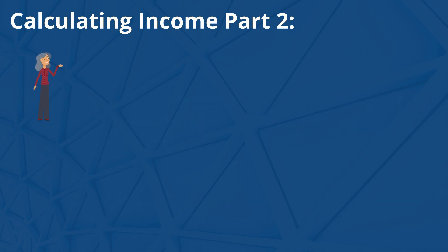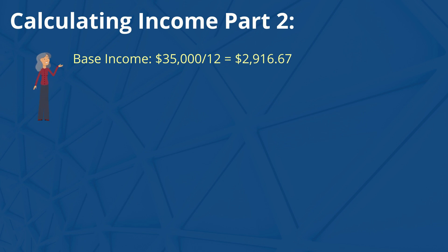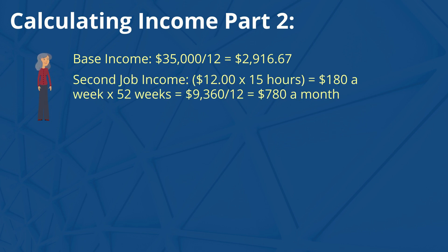Let's look at Savannah's income first. Her base income: $35,000 divided by 12 is equal to $2,916.67. Now for Savannah's second job, we'll take $12 an hour times 15 hours a week, equal to $180 a week, times 52 weeks is equal to $9,360, divided by 12 is equal to $780 a month.